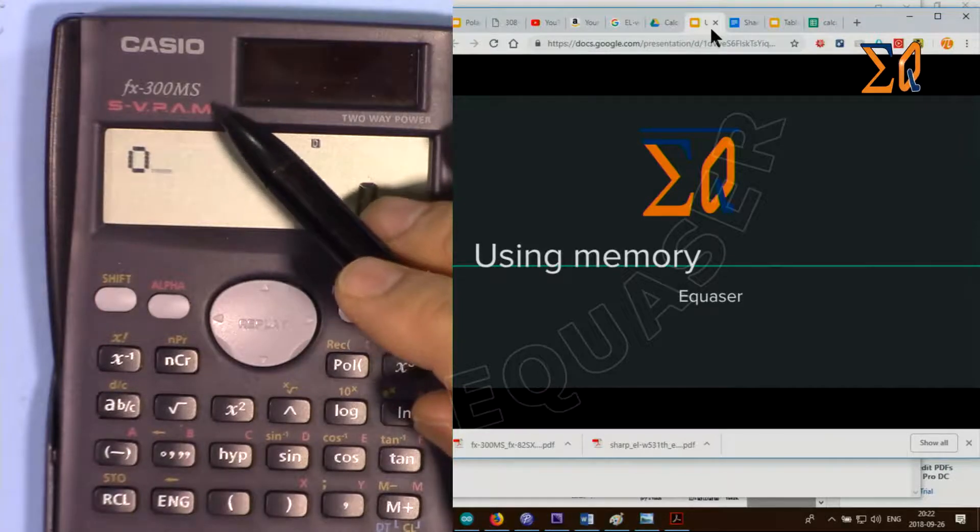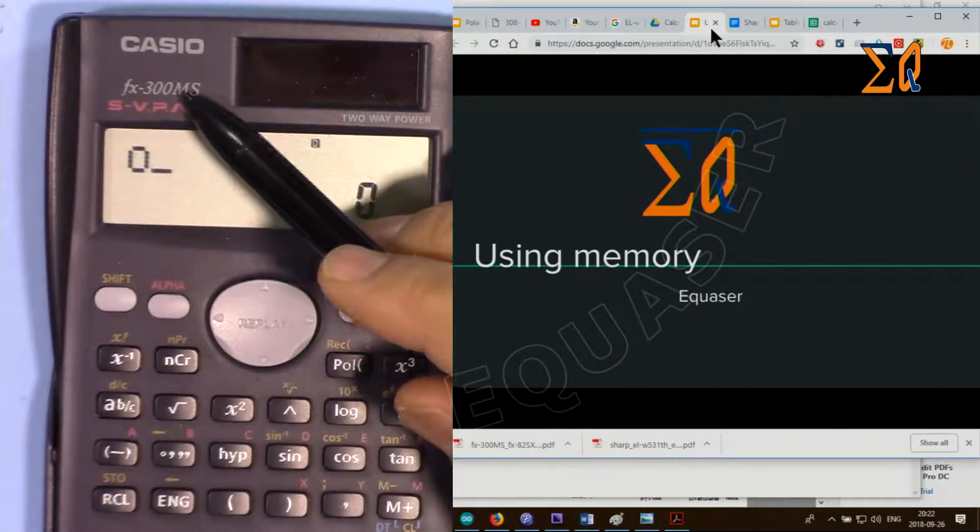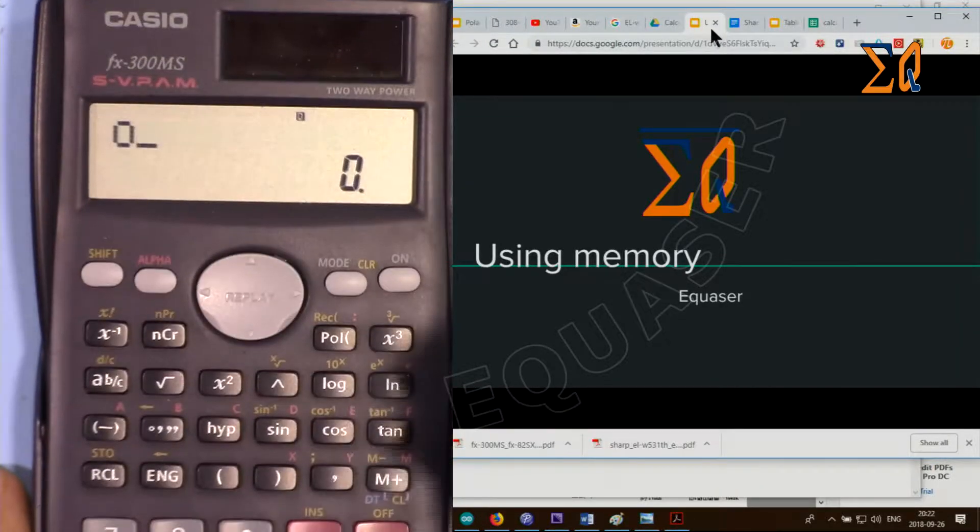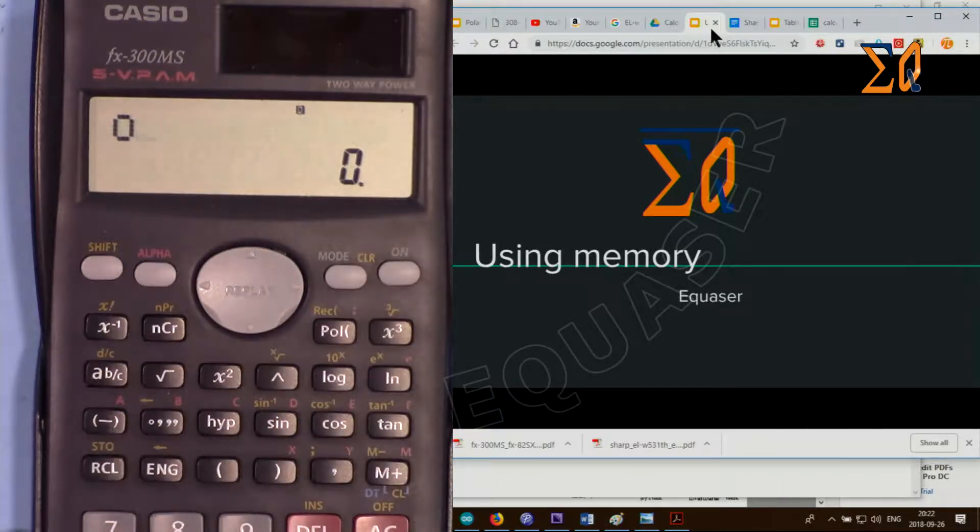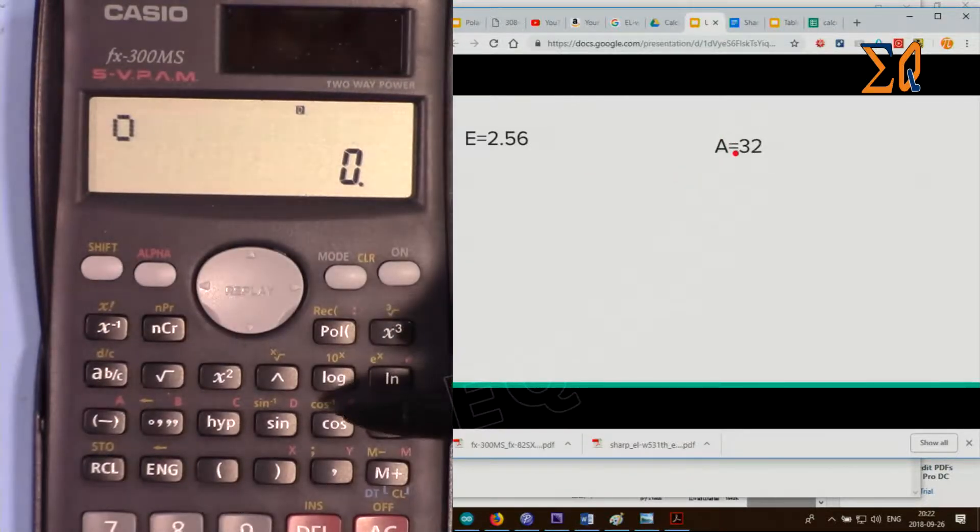This also applies to the 85MS, 220MS, 300MS, and 350MS models. In this calculator we have two types of memory. One is the independent memory where you can store a value, for example you can store a value into E or memory A.